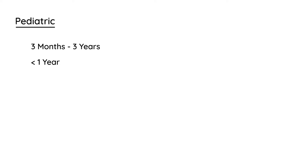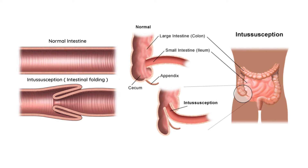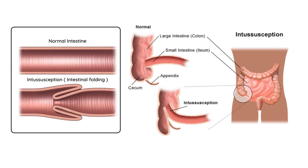So what is it? Let's look at this diagram. Here you have a normal intestine — completely patent, no problems. Then you have intussusception, where one part of the intestine kind of goes into another part. This is referred to as telescoping, where one portion of the intestine telescopes into an adjacent segment, and you can clearly see that in the diagram.